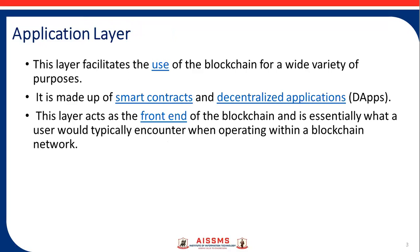The first one is the application layer. Application layers are developed due to the characteristics of the blockchain, such as the immutability of the data, the transparency between the participants, and the resistance against attacks.